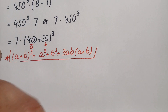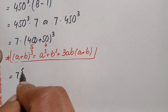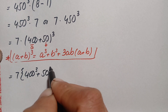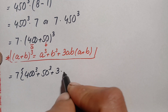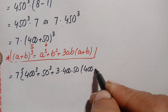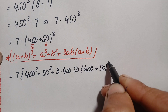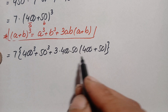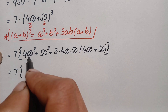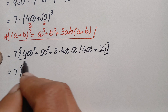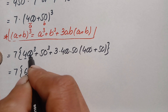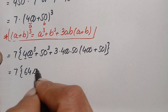Using this cubic identity, this becomes 7 times [400³ + 50³ + 3 × 400 × 50 × (400 + 50)]. Let's find 400³: 4³ = 4×4×4 = 64, and since 400 has two zeros, cubing gives six zeros, so 400³ = 64,000,000.